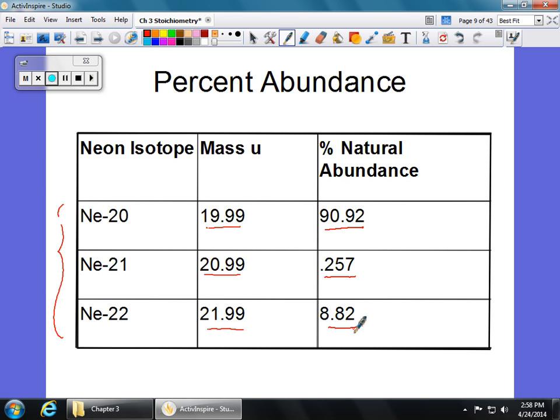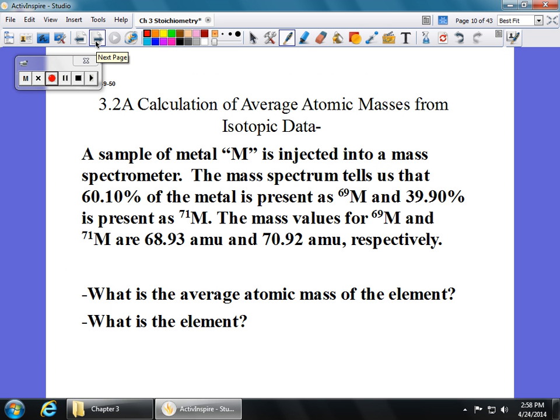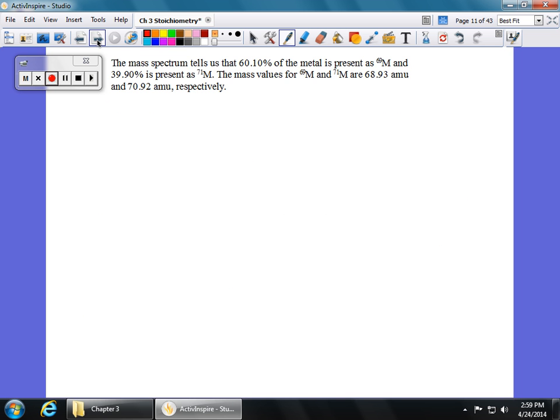Well, these isotopes, what we're going to look at is try and figure out what would the average be if we brought all of these together, looking at those components? So what does a sample problem look like with this? So let's say I ran into this one. We have some unknown substance. And we look at its mass spectrum. And it tells us that the substance is 60.10% one particular isotope. That's M69. And 39.9% some other isotope, which is M71. M is obviously just standing for some metal. So the mass values for M69 and M71 are 68.93 and 70.92. What's the average atomic mass? And what is the element?